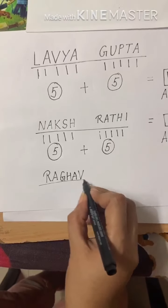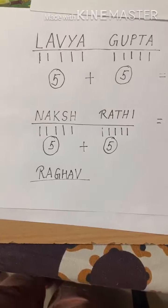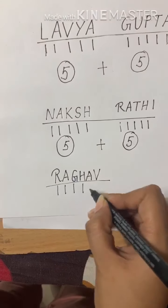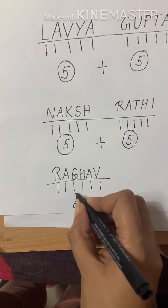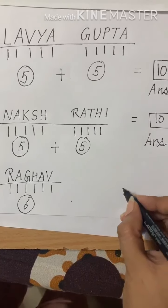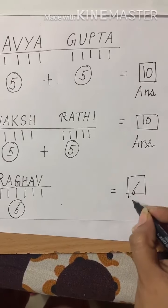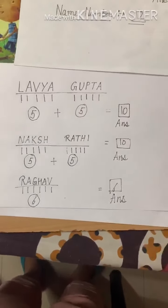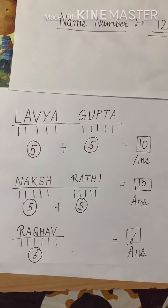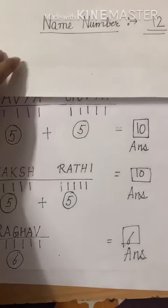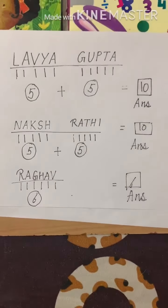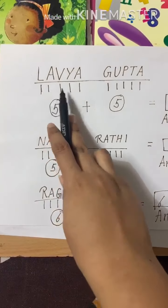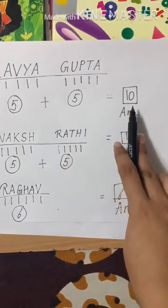Suppose somebody doesn't use a surname. For example, I have written the name Raghav — only Raghav. Then: 1, 2, 3, 4, 5, and 6. So how many? 6. Because if you don't use any surname, 6 will be your answer. If you use a surname, then you need to add. The name number is counting the number of letters in your first name and surname and then adding them.